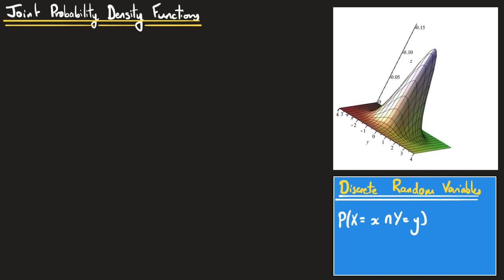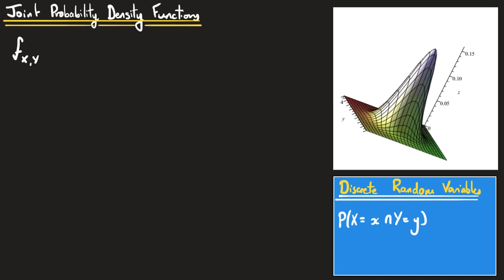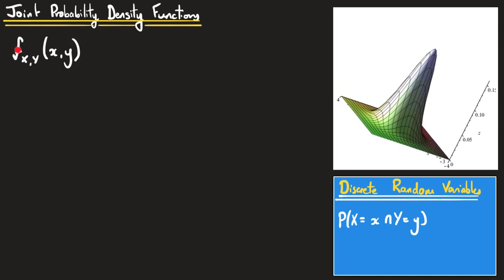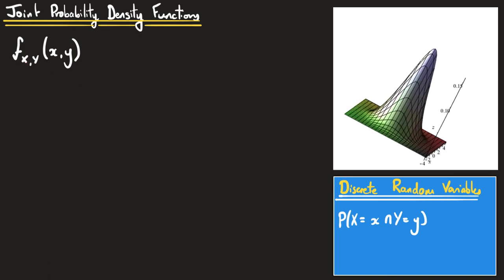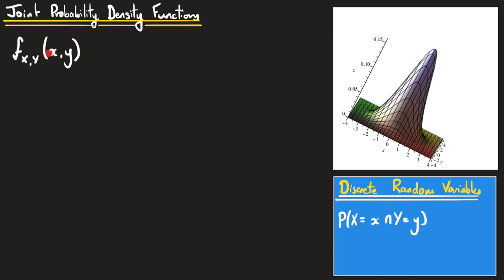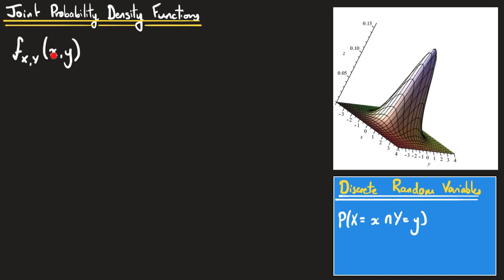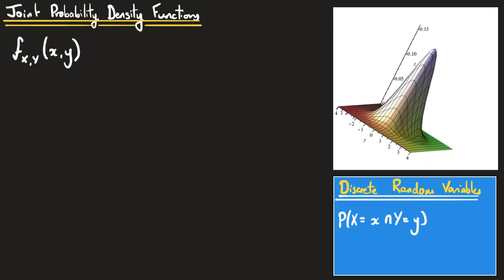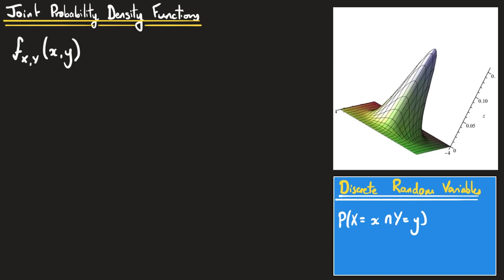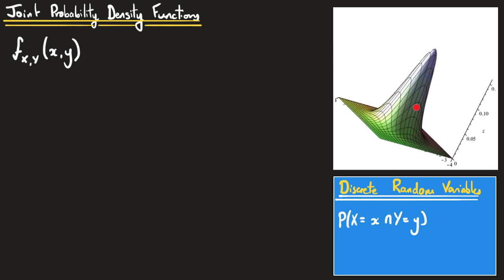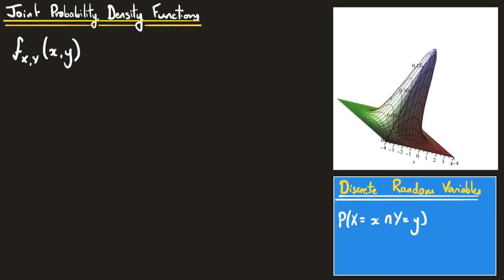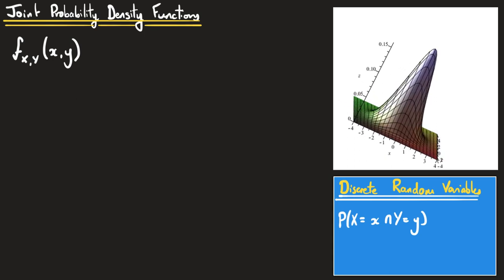Instead we have what is known as a joint probability density function. The little f tells us we're looking at a probability density function, with x and y indicating it's the joint PDF of x and y, and it will be a function of particular observations little x and little y. In this animation we can see an example of a joint probability density function. The key things to note are that the volume under the PDF is equal to one, and the height of the PDF tells us about the relative likelihood of pairs of observations of x and y.